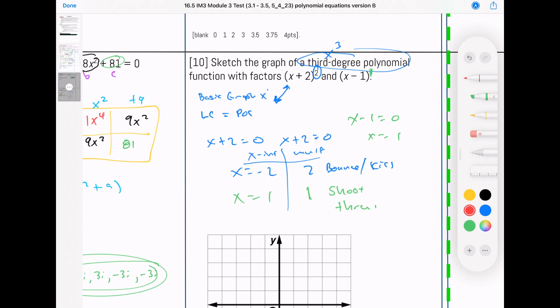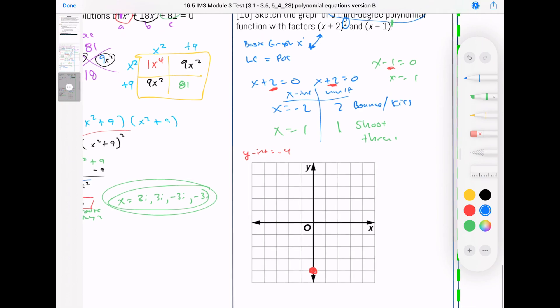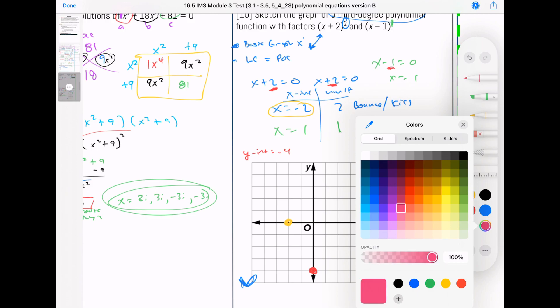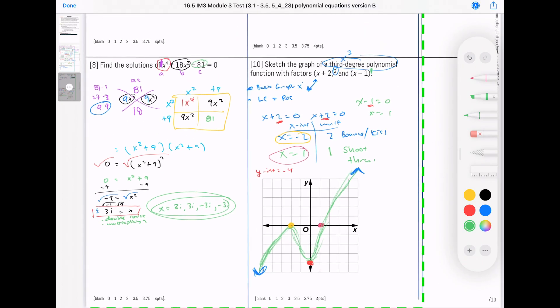The trick to find the y-intercept, you don't have to multiply it all out, but I have 2 times 2 times negative 1, so that'll be a negative 4. So I have a y-intercept of negative 4. So we said the basic graph arrows start down, ends up. We have one at negative 2 that's going to be a bounce. X equals 1 is right here. We're going to go left to right, so we're going to bounce, and we're going to shoot through there. So my graph is going to look something like this. Hopefully that was helpful. See ya!